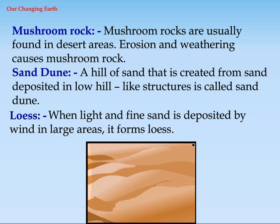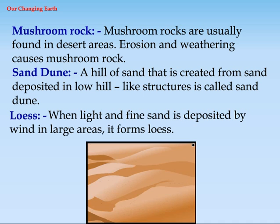Mushroom rock: Mushroom rocks are usually found in desert areas. Erosion and weathering cause mushroom rock. Sand dune: A hill of sand created from sand deposited in low hill-like structures is called a sand dune. Loess: When light and fine sand is deposited by wind over large areas, it forms loess.